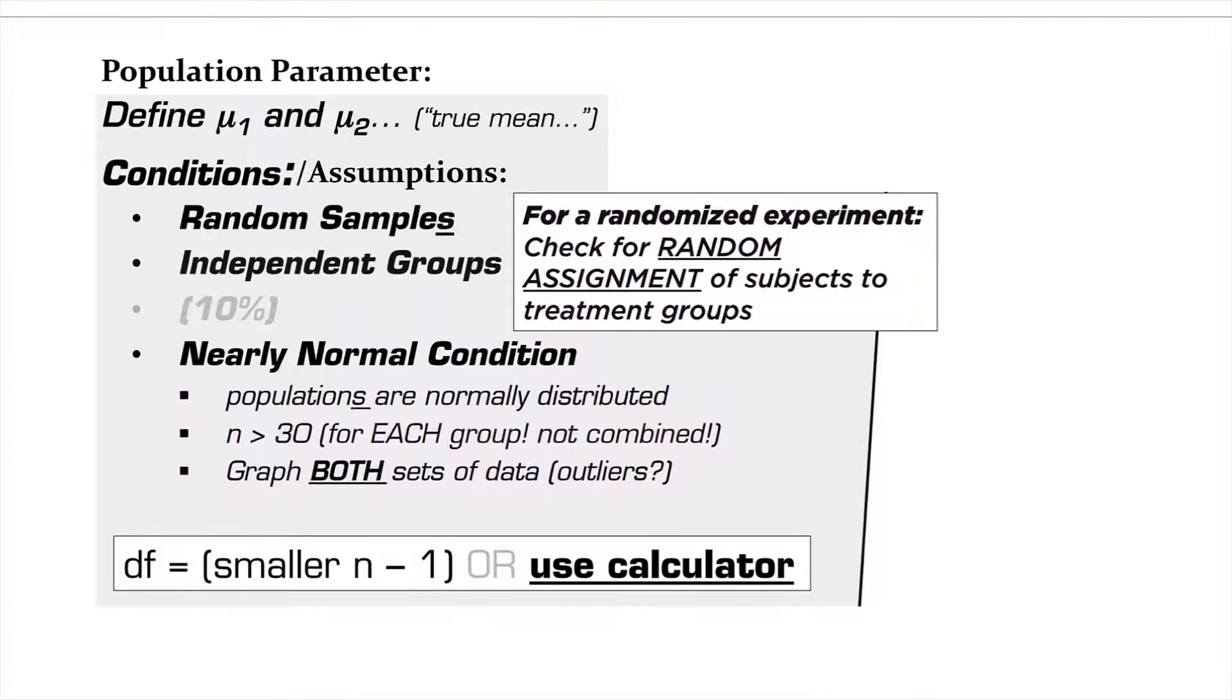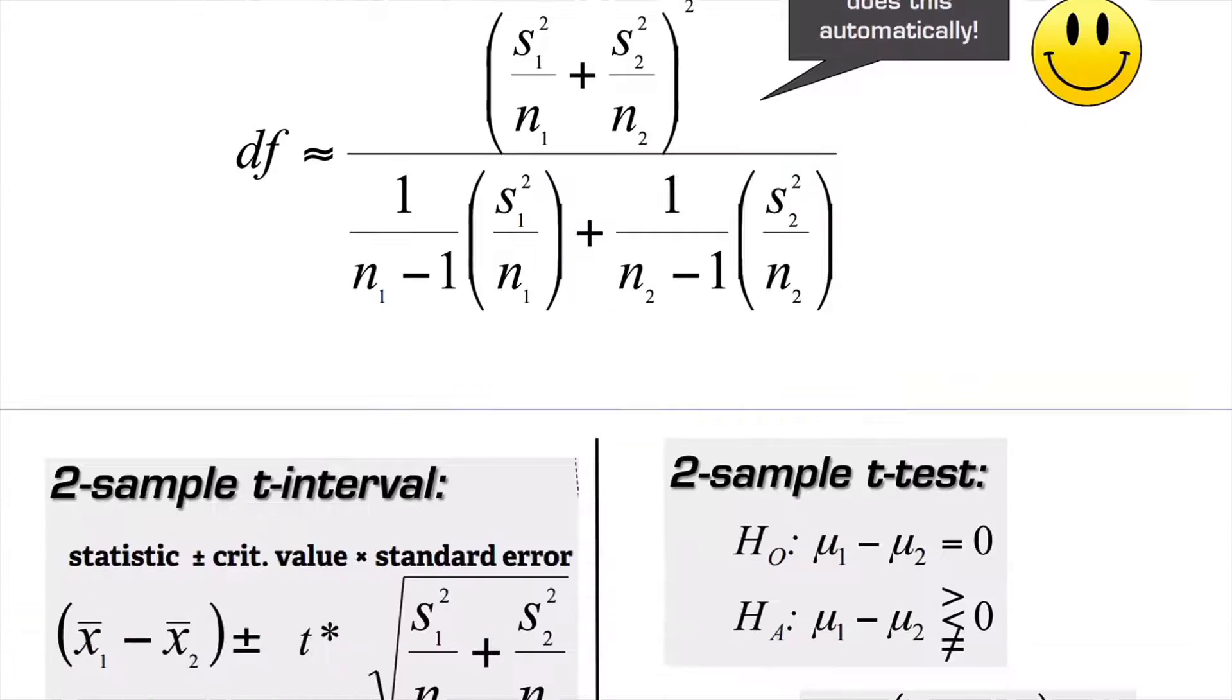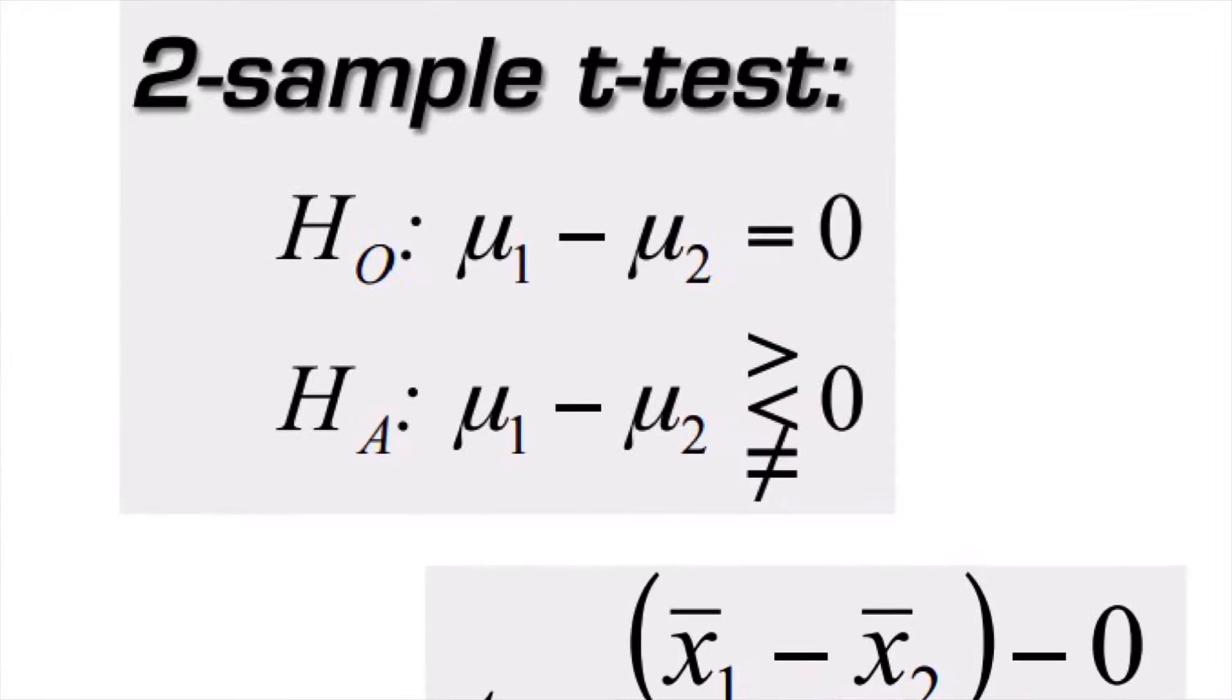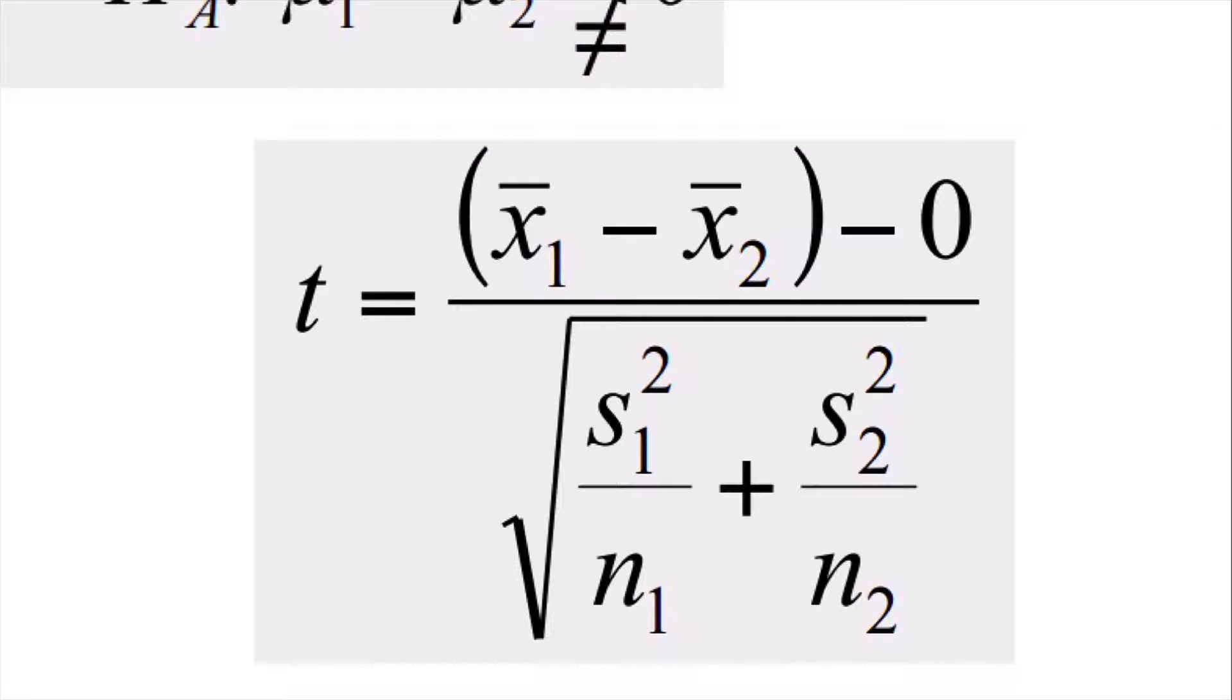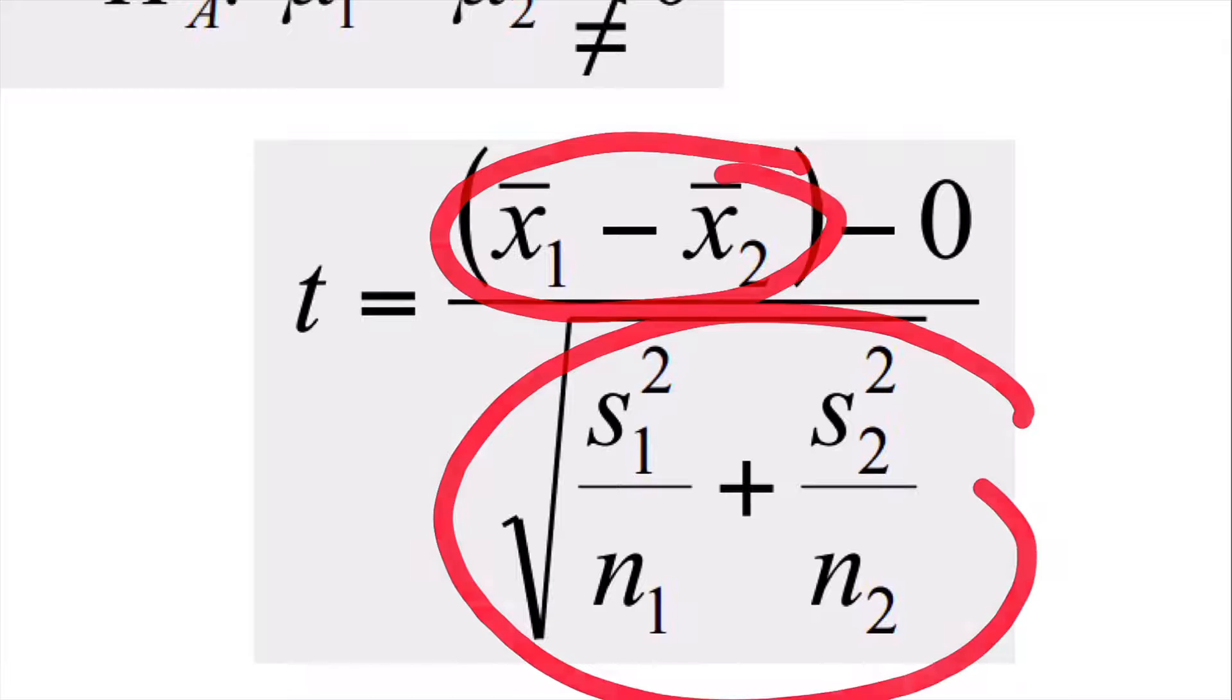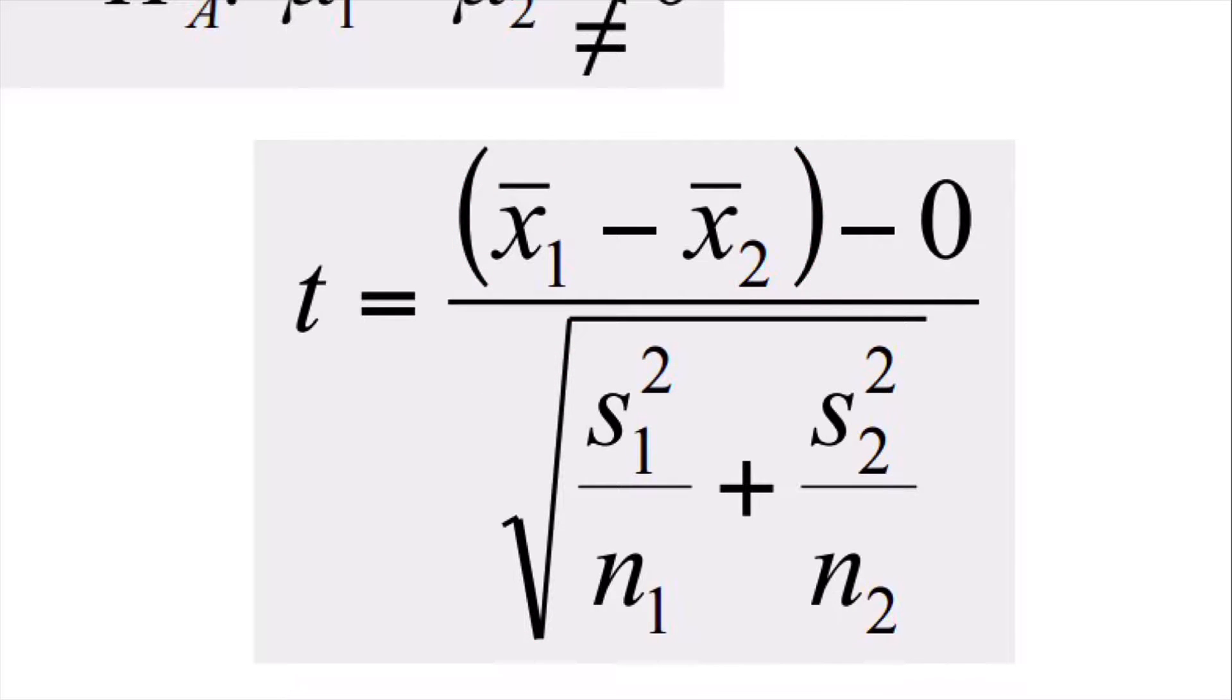So that's always going to be your claim. It's always going to be mean one is equal to mean two, or mean one minus mean two equals zero. That's always going to be the null hypothesis when you're doing two sample testing. Parameters and assumptions are the same as last time because we did intervals last time, and then no pooling needed. Still using these three conditions and assumptions.